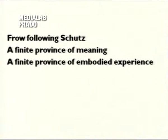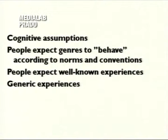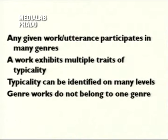I want to emphasize one point from Frow, which is a passage where he uses the words of Alfred Schutz to describe genre as a finite province of meaning. Frow describes these as representational, but he also states that Schutz originally referred to them as experiential. I propose we go for both, and emphasize the experiential dimension — that they're both representational and experiential. Genres are finite provinces of embodied experience. The cognitive assumption of such a position is that people expect genres to behave according to norms and conventions, which is another way of saying they expect well-known experiences — in other words, generic experiences.